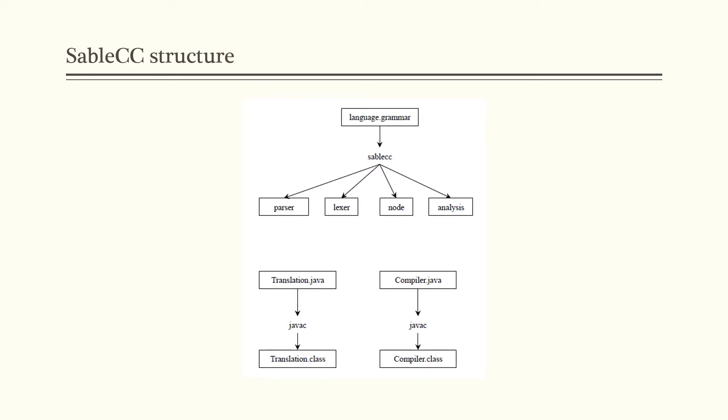We also supply a translation.java file. We need to compile it to get translation.class, which will be used by SableCC in order to run our input grammar file. We also need to provide a compiler.java, which also needs to be compiled before we can use it. So there are three files required: grammar, translation, and compiler.